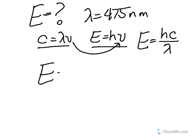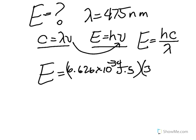E equals 6.626 times 10 to the negative 34 joule seconds, which is Planck's constant, times the speed of light, which is 3.00 times 10 to the 8 meters per second,